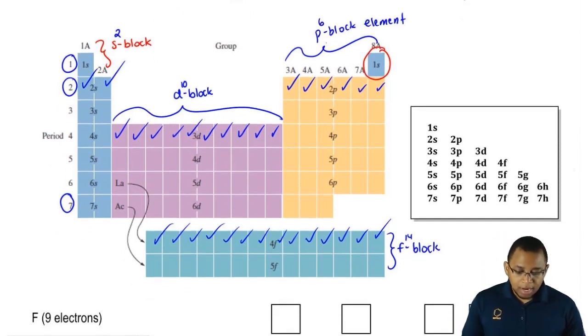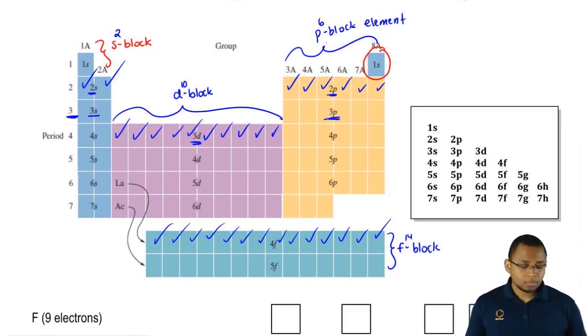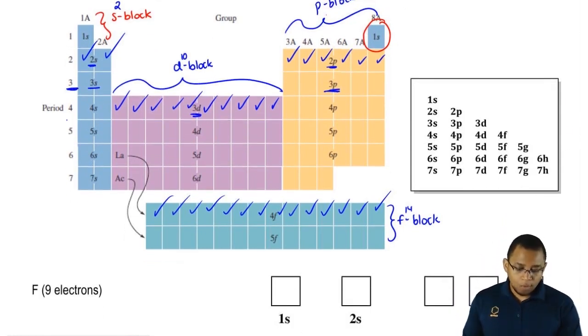And we're going to say here that the period number basically tells me the number of the orbital. So in period 2, we have 2s and 2p. In period 3, we have 3s, we also have 3d and we have 3p. For period 4, we have 4s, 4d, 4p and 4f.